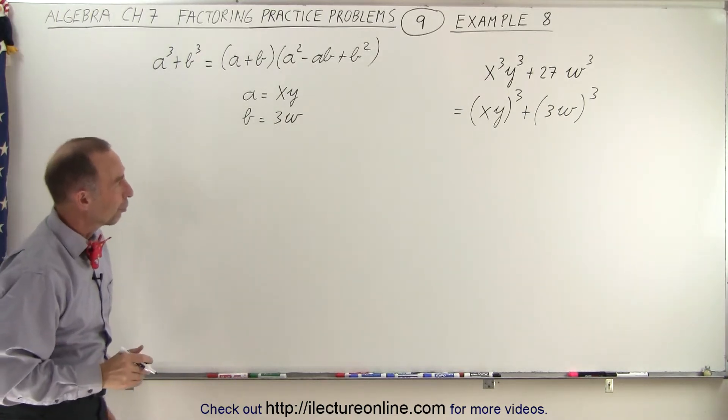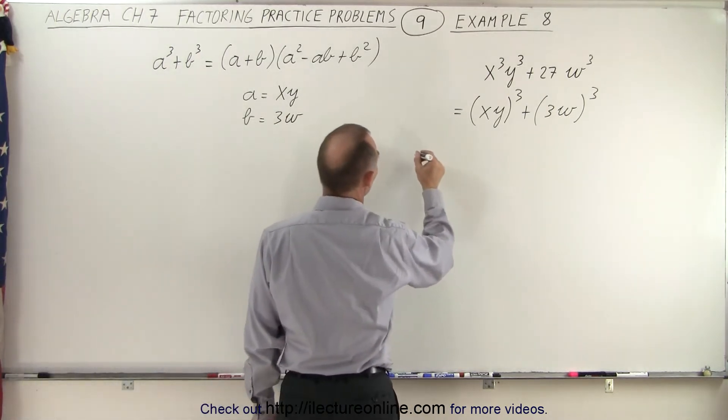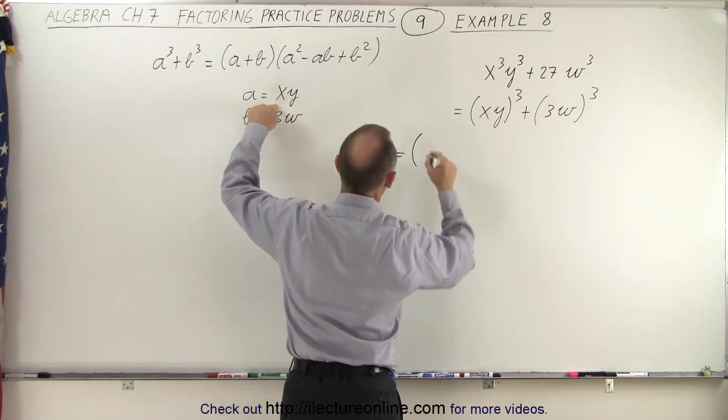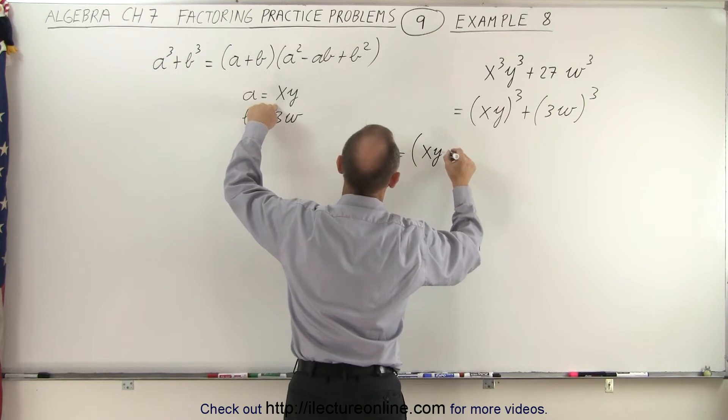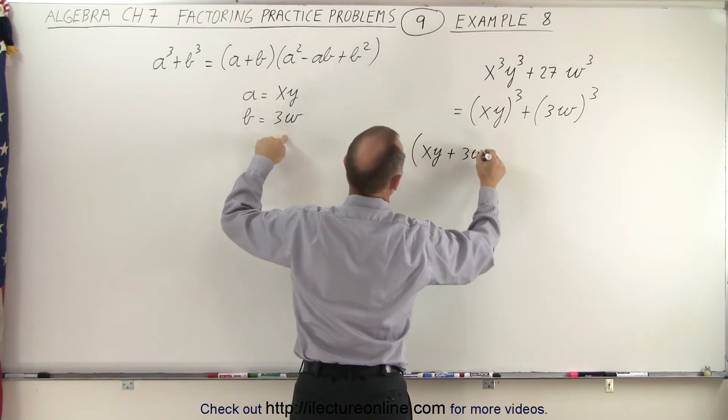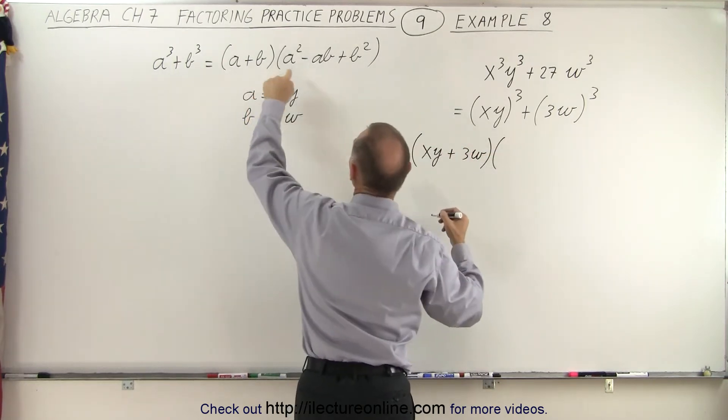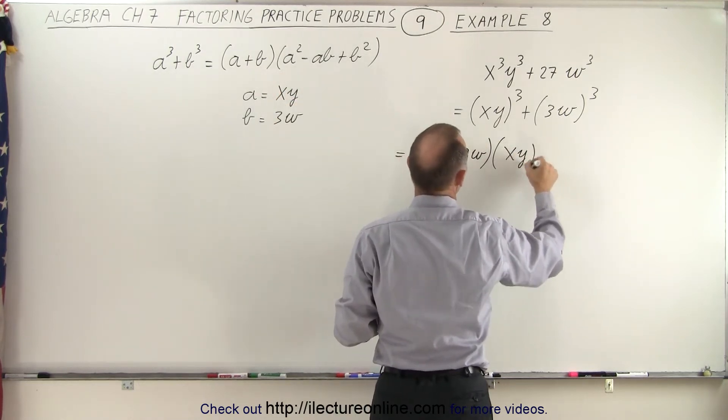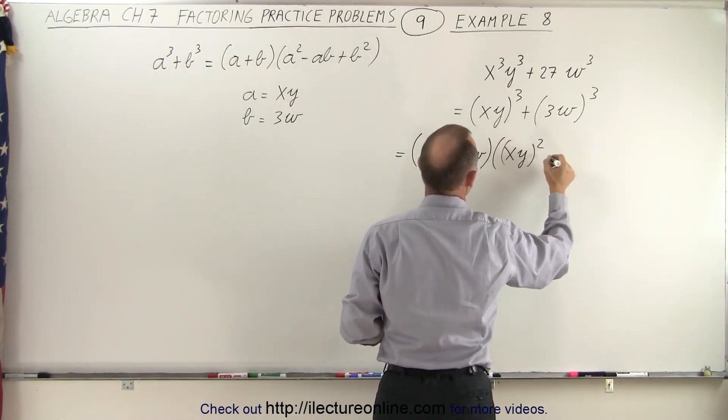we end up with the factored form of that example. So a + b will now be xy + 3w, times a squared, which will be the quantity xy squared, minus